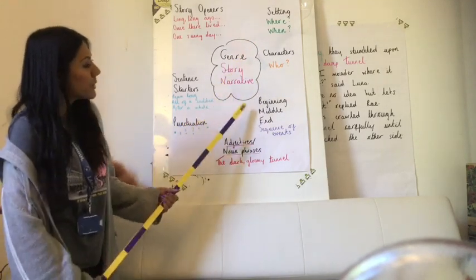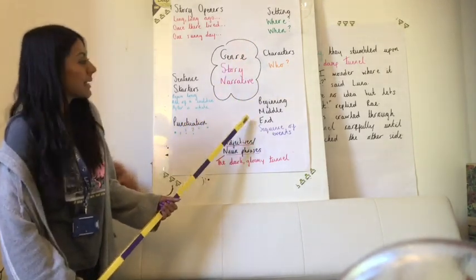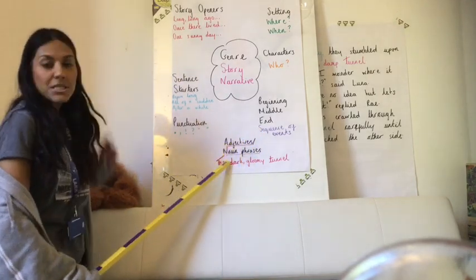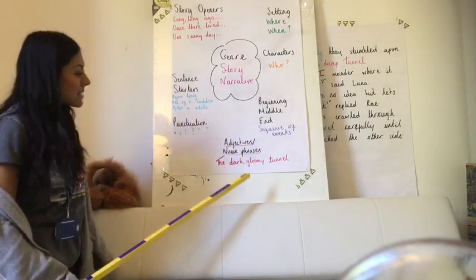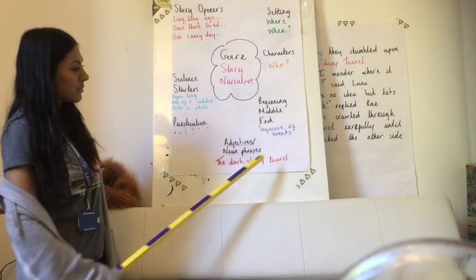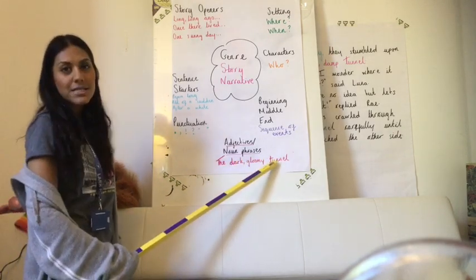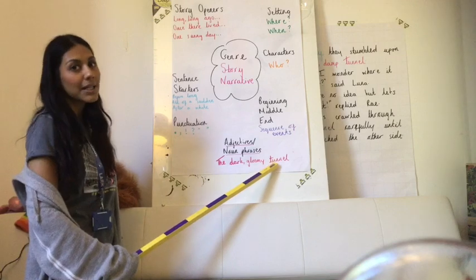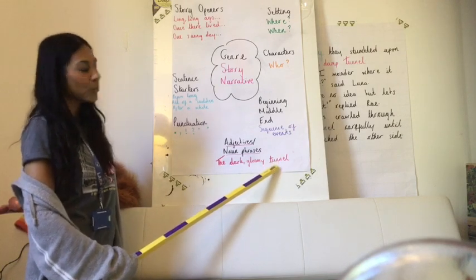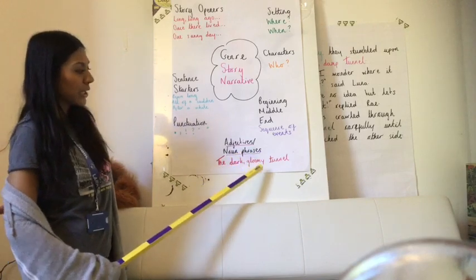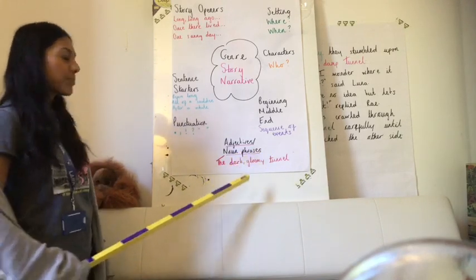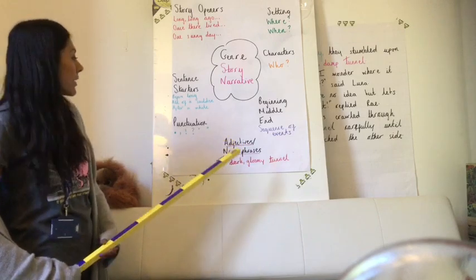In a story, we always need a beginning, a middle and an end — so a sequence of events. Remember adjectives and noun phrases. I've got an example up here for you: 'the dark, gloomy tunnel'. What kind of word is 'tunnel'? A noun. And what are 'dark' and 'gloomy'? Adjectives. Remember our noun phrases — I'd like to see some of them in your writing.